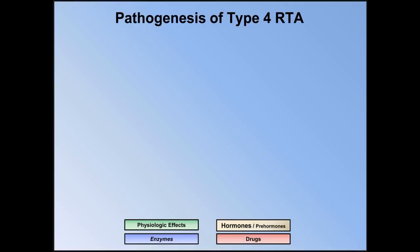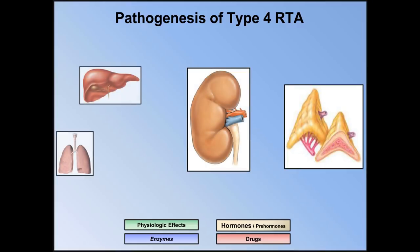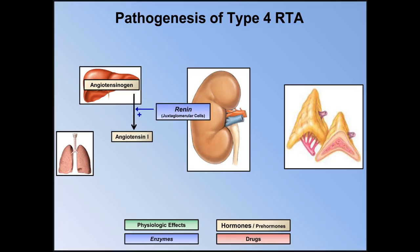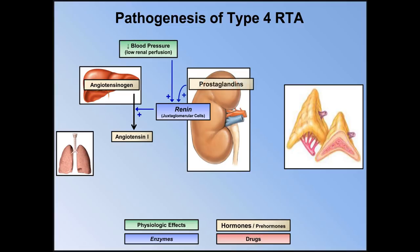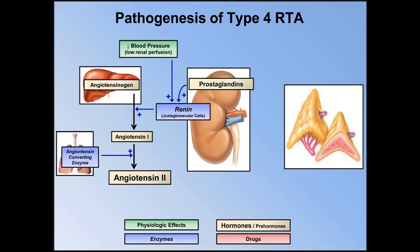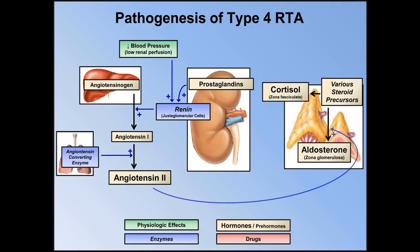To understand the possible causes of type 4 RTA, I'd like to review a little more of the physiology that controls the actions of aldosterone. On a basic level, aldosterone regulation predominantly involves a cascade of hormones and prehormones in the adrenal glands and the kidneys, but also to some extent the liver and lungs. The cascade begins in the liver, where a prehormone called angiotensinogen is produced. Angiotensinogen is converted into another prehormone called angiotensin-1 with the help of the enzyme renin. Renin is produced in the juxtaglomerular cells in the kidney in response to low blood pressure or renal perfusion and requires locally produced prostaglandins. Angiotensin-1 travels in the systemic circulation to the lungs, where it is transformed into angiotensin-2 by the angiotensin-converting enzyme. In the adrenal glands, various steroid precursors are converted into either cortisol or aldosterone, and angiotensin-2 stimulates the synthesis of aldosterone specifically.